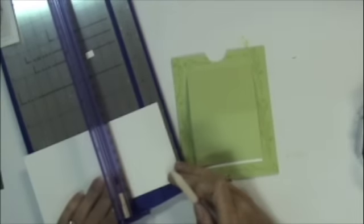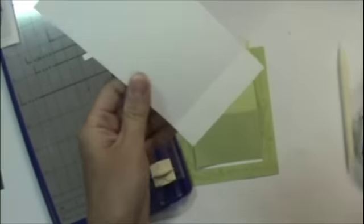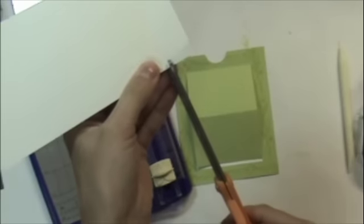And now I'm going to score one of the ends about an inch from the edge and fold it up. Now we just got to cut the corners out. So I'm cutting right up to the scored line.